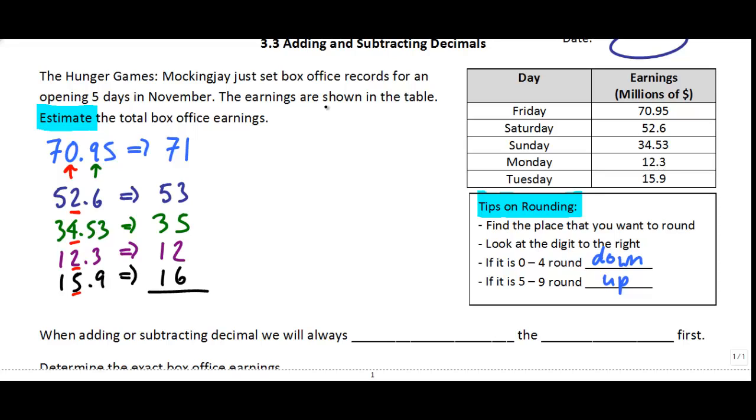So now we want to do an estimate of our total earnings. Here's my rounded off numbers. I'm just going to use those to find my estimate. I've got 71 plus 53 plus 35 plus 12 plus 16. And I'm going to add these all together. I just go down my ones column. So 1 plus 3 is 4, plus 5 is 9, plus 2 is 11, plus 6 is 17. Carry the 1 here. And then 1 plus 7 is 8, plus 5 is 13, plus 3 is 16, plus 1 is 17, plus another one is 18. So my final estimate is it's somewhere around $187 million for the weekend.